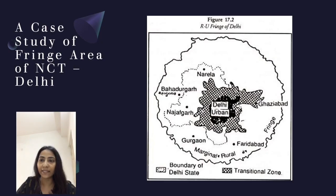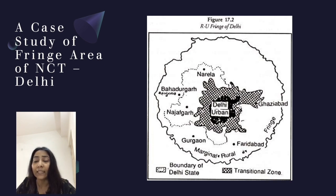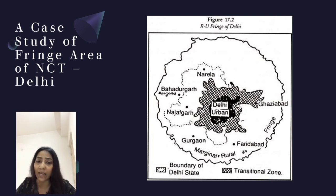Here is a case study of the fringe area — Delhi NCT, the National Capital Territory of Delhi. The darkest middle portion is the Delhi urban area, and around it is a transitional zone. The outermost line defines the rural-urban fringe area of Delhi. Various regions like Bahadurgarh, Gurgaon, and Faridabad are lying around the NCT region.